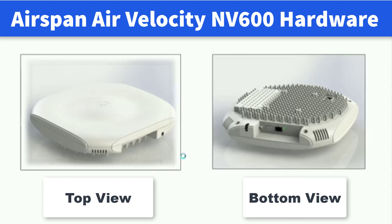This slide shows the top view and bottom view of AirVelocity NV600 small cell. The bottom view shows various ports which we are going to discuss in the next slide. A heat sink is provided to this device, visible from the bottom view.